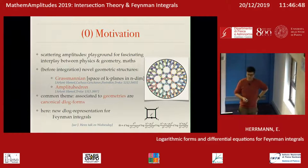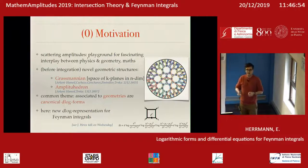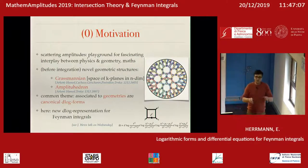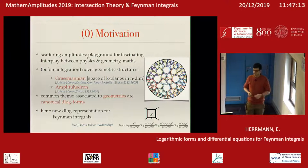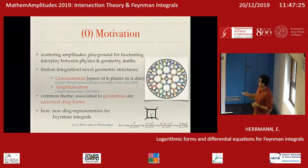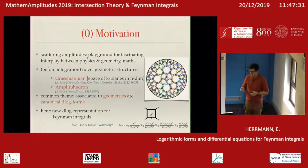It turns out that D-log forms from the Grassmannian and from geometric ideas in scattering amplitudes give a new representation of Feynman integrals — not in terms of Feynman parameter integrals or Baikov integrals, but in terms of D-log forms. As Johannes showed in his talk on the first day, associated to a Feynman integrand there is a differential form which you can write as D-log forms.